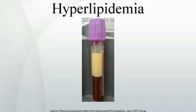Hyperlipoproteinemia Type IV, familial hypertriglyceridemia, is an autosomal dominant condition occurring in approximately 1% of the population. Hyperlipoproteinemia Type V, also known as mixed hyperlipoproteinemia familial or mixed hyperlipidemia, is very similar to Type I but with high VLDL in addition to chylomicrons. It is also associated with glucose intolerance and hyperuricemia.